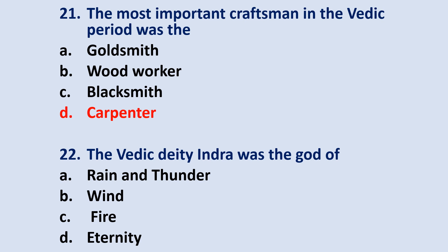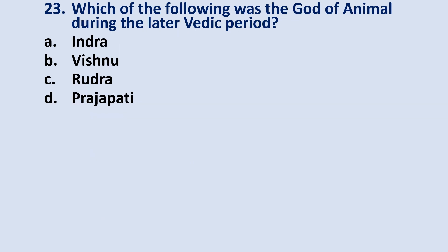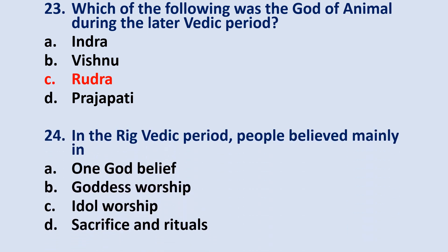Question number 22: the Vedic deity Indra was the god of? The answer is option A — Rain and Thunder. Question number 23: which of the following was the god of animals during the later Vedic period? The answer is option C — Rudra. Question number 24: in the Vedic period, people believed mainly in? The answer is option D — Sacrifice and rituals.